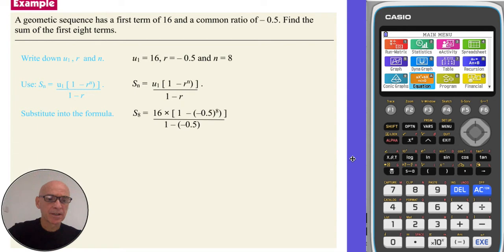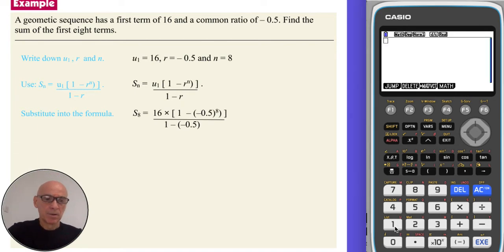And if we type it into our calculator, by selecting Run Matrix menu, that's option 1, I'll press the fraction button to set up a fraction. 16 multiplied by brackets, 1 minus, and then another bracket to put r in as it's negative, negative 0.5. Close that bracket around r, and raise to the power of 8.